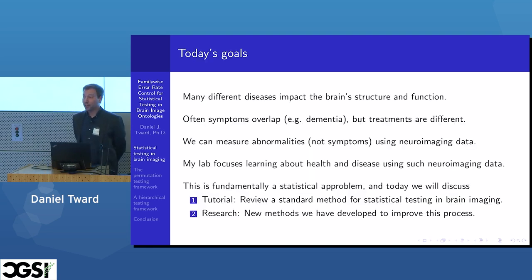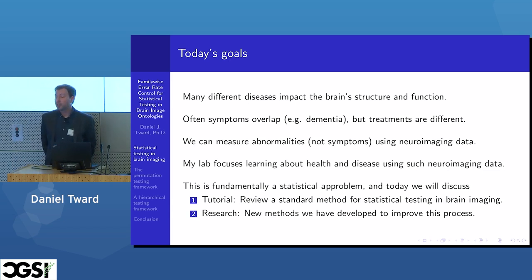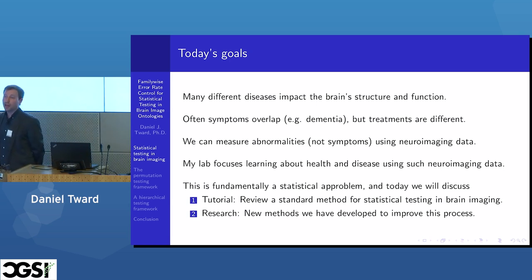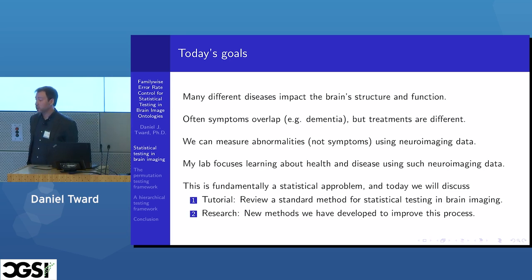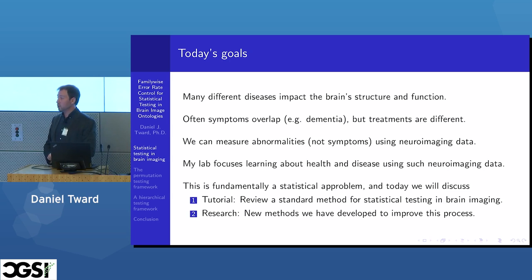My goal: many different diseases impact the brain's structure and function, and for all these different diseases, oftentimes the symptoms overlap. For example, a symptom of dementia just means your cognition is not working properly, but it can have many different causes, and each cause would have a different treatment. So rather than relying on symptoms, we can identify abnormalities in the brain's function or structure using neuroimaging data. My lab focuses on learning about health and disease from such neuroimaging data, which is fundamentally a statistical problem.